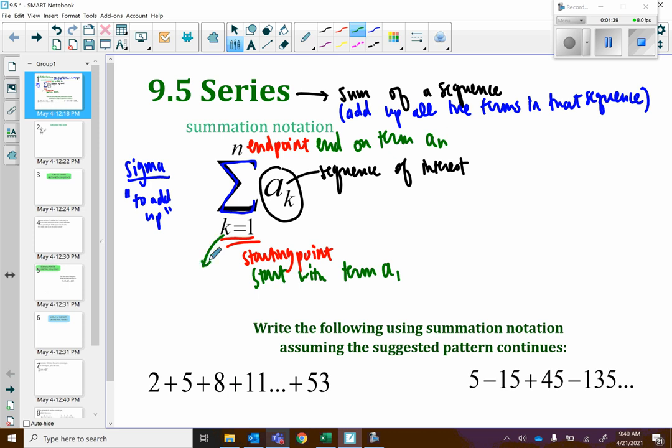K is known as the index of summation. And it really is just looking at what variable we are using to represent the term number.